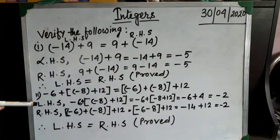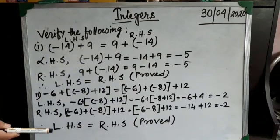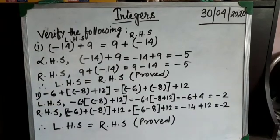So you can see that LHS and RHS, both parts are equal. So we can write LHS is equal to RHS. It is proved.